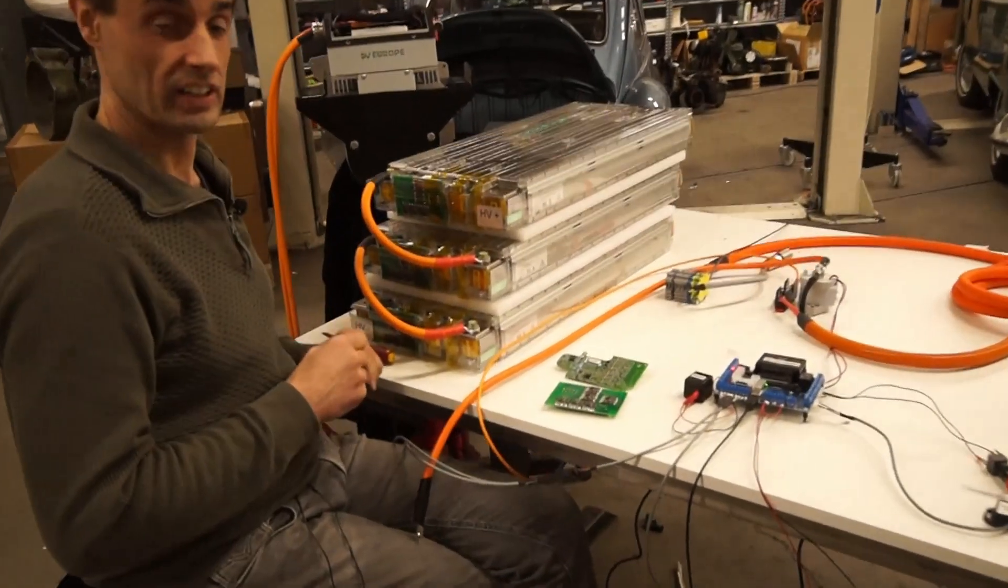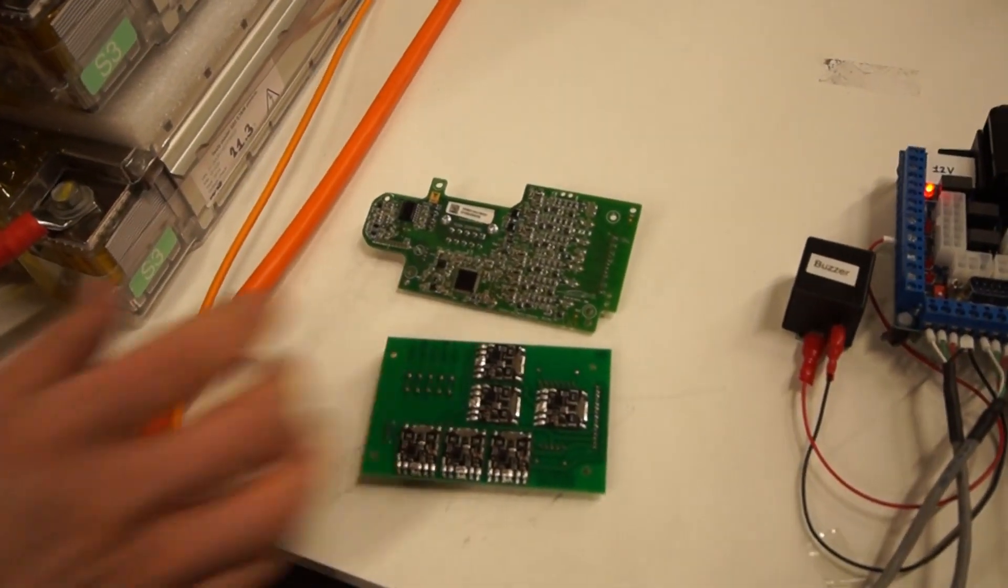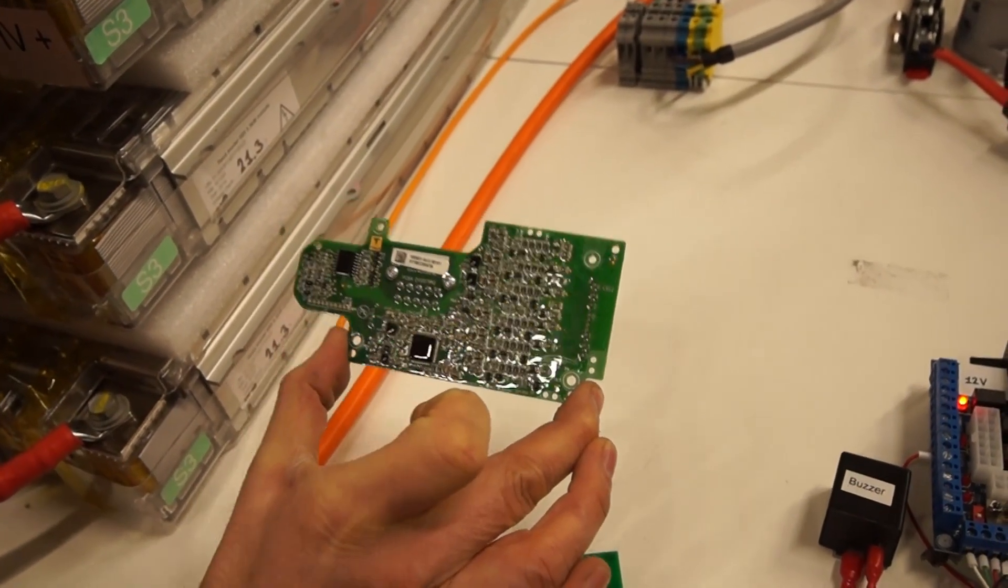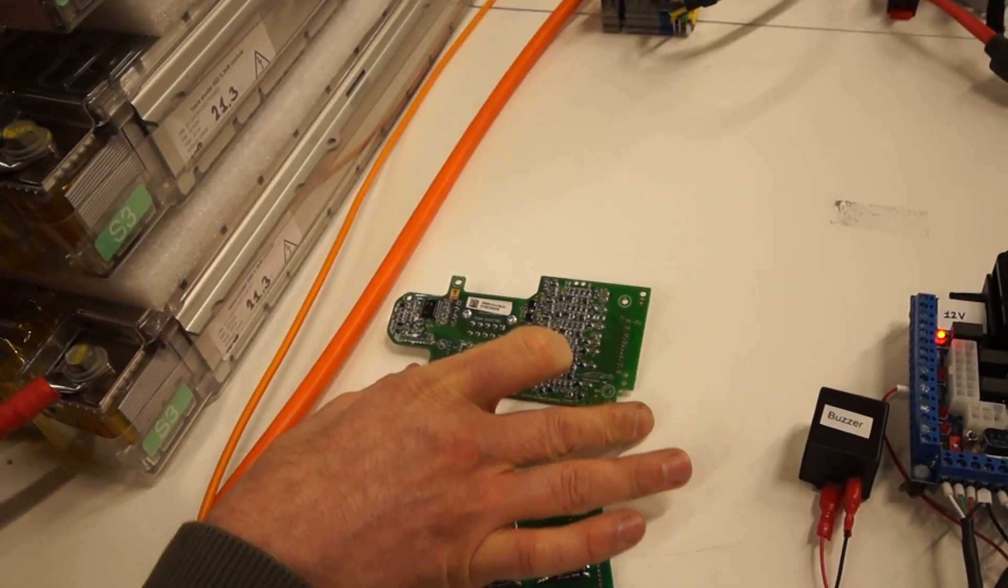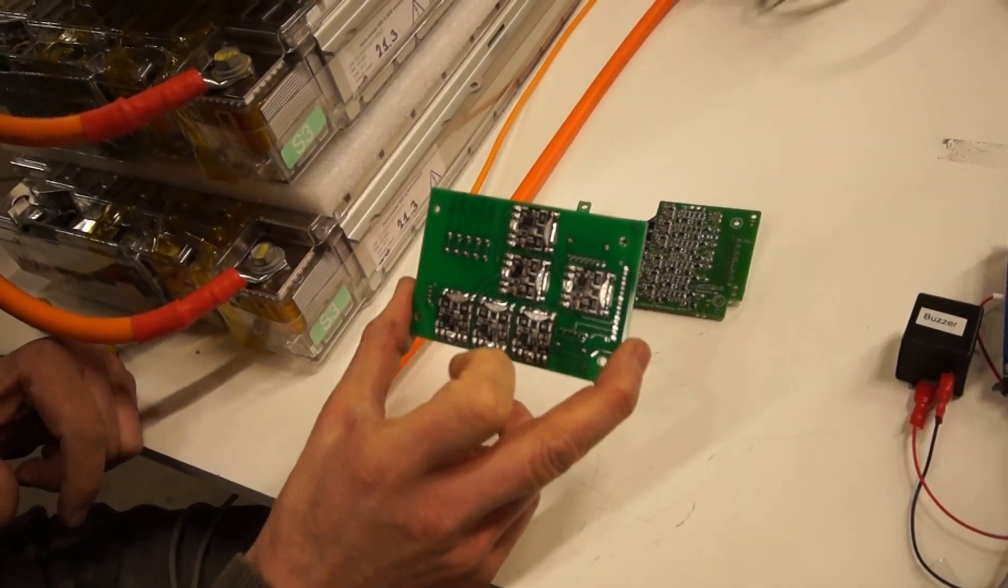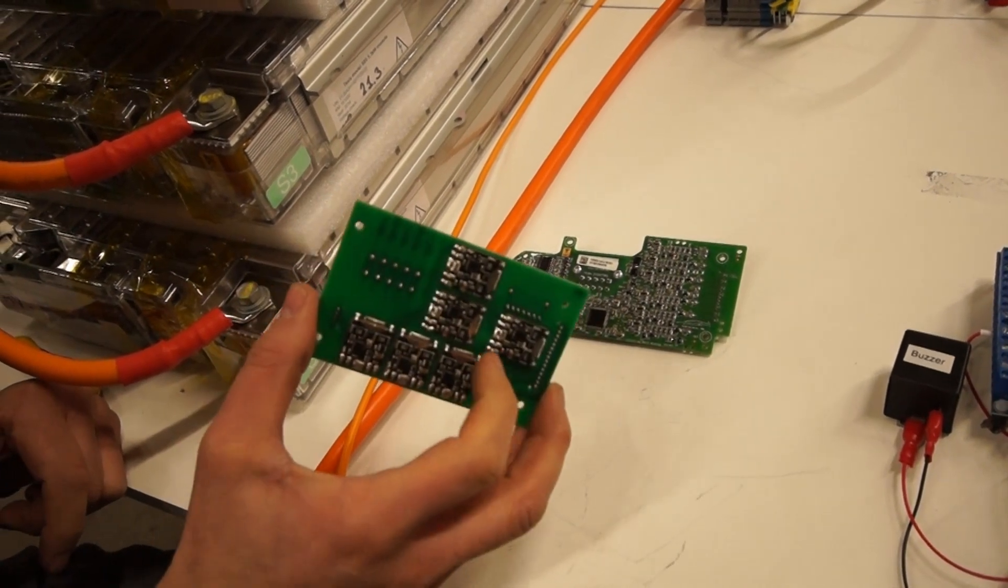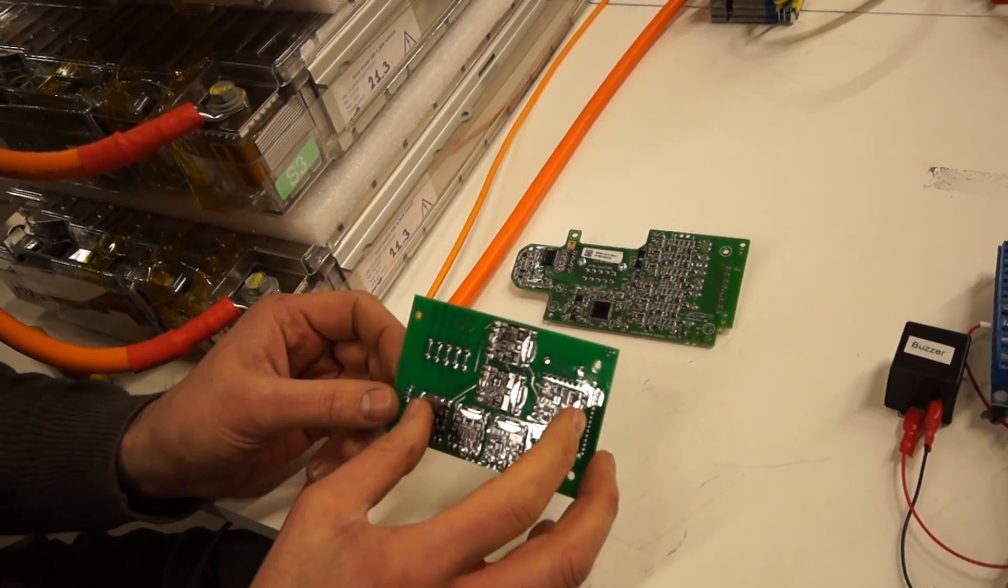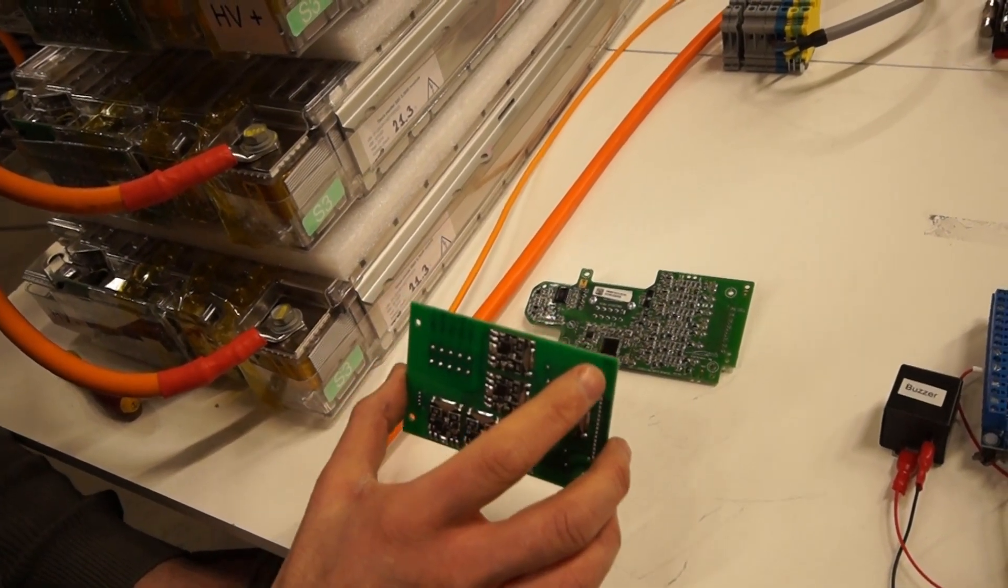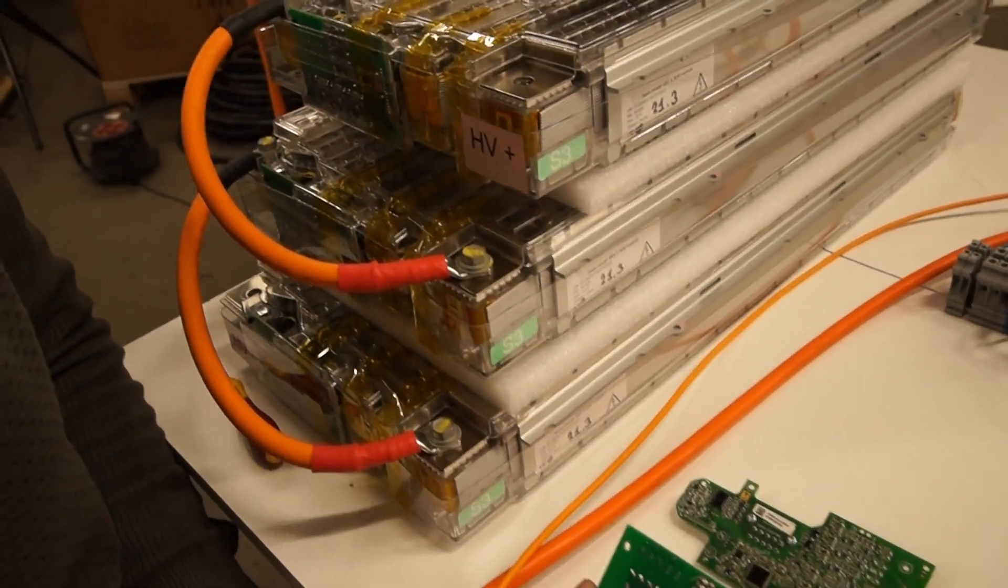First I want to explain what we do to use the Tesla batteries safely. What you see here is the original PCB from Tesla. This does not communicate without the rest of the Tesla, so that is why we replace it with our own PCB board. This PCB board communicates with our standard BMS system and it can communicate between the batteries with a single wire. So you will only need one wire to communicate between the Tesla batteries, and you will have a lot less wiring than you normally have.